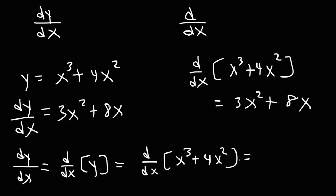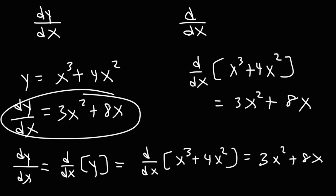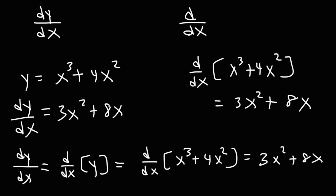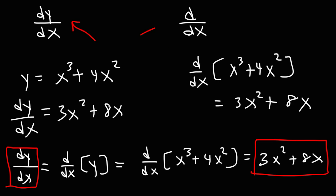y is x cubed plus 4x. Using the power rule, this gives us 3x squared plus 8x, which, as we can see, is equal to dy/dx. So hopefully that connected everything together when you see these two things.